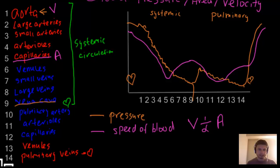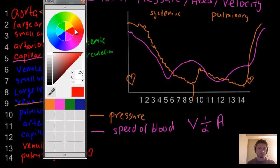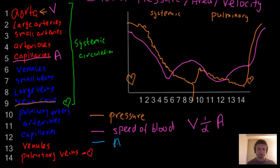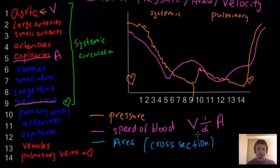The last variable to look at is cross-sectional area, shown in bright blue — the total cross-section of the blood vessels. Area is inversely proportional to velocity. It starts relatively low at the aorta, rises up to its maximum at the capillaries, then drops off again in the venous side, before rising again at the pulmonary capillaries and then dropping once more.